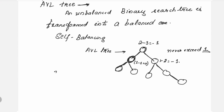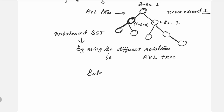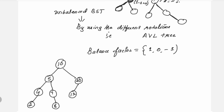Whenever we see an unbalanced binary search tree, we balance it using rotations — operations performed on the unbalanced tree to make it a balanced tree, which is then called an AVL tree. In simpler words, every node has a balance factor, and the balance factor will only have three values: either 1, 0, or minus 1.